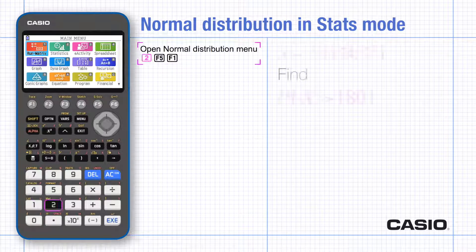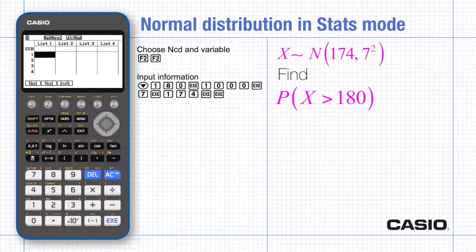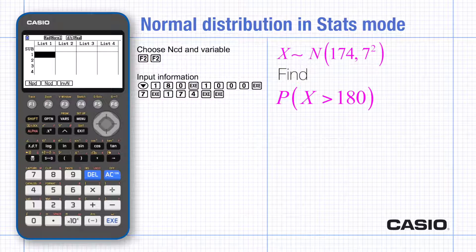The normal distribution can be found in stats mode, distribution and normal. F1 finds the probability that the random variable rounds to a particular integer value. F2 finds the probability that the random variable lies in a given interval.